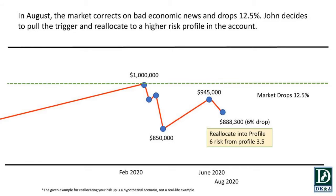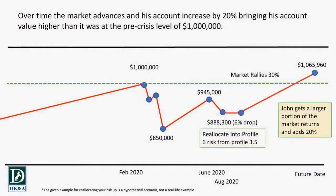The market drops 12.5 percent. John decides it's time to pull the trigger and reallocate to a higher risk portfolio. Because he's in a 3.5 portfolio profile, he didn't go down as far as the market. Once we drop and feel we've hit that mark, we risk up to a profile 6 in August.